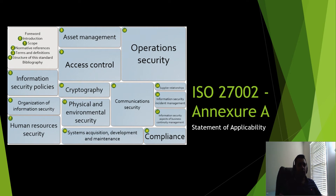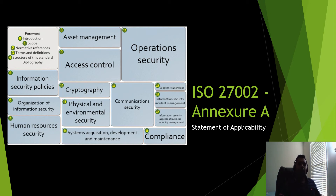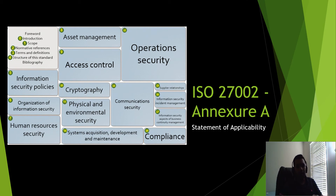Section 17 is business continuity management. You conduct a business impact analysis to identify activities that could affect the business, then define business continuity and disaster recovery plans for the most critical ones. You also define redundancies so services can be restored within agreed RTO and RPO windows — for example, recovering within four hours as defined in an SLA. Plans must also be tested regularly to verify they work.